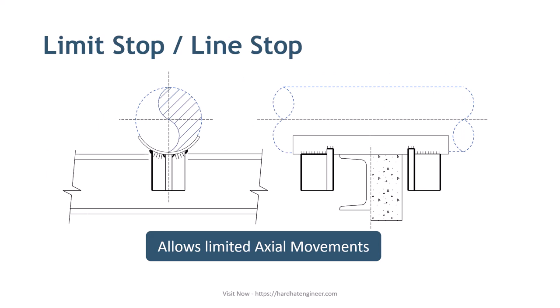Next is limit stop, or line stop. A line stop is used to prevent excessive line travel on the pipe rack — it restrains a pipe from moving along its length. This is opposite to the guide, which allows free axial movement. Note that the line stop does allow a predetermined axial movement, as you can see in the image where there is a gap between the stop and the beam. It will allow the pipe to move only by that predefined gap, restricting any additional movement beyond the allowable limits. So when the line expands and hits the stop, it will not allow further expansion beyond that point.